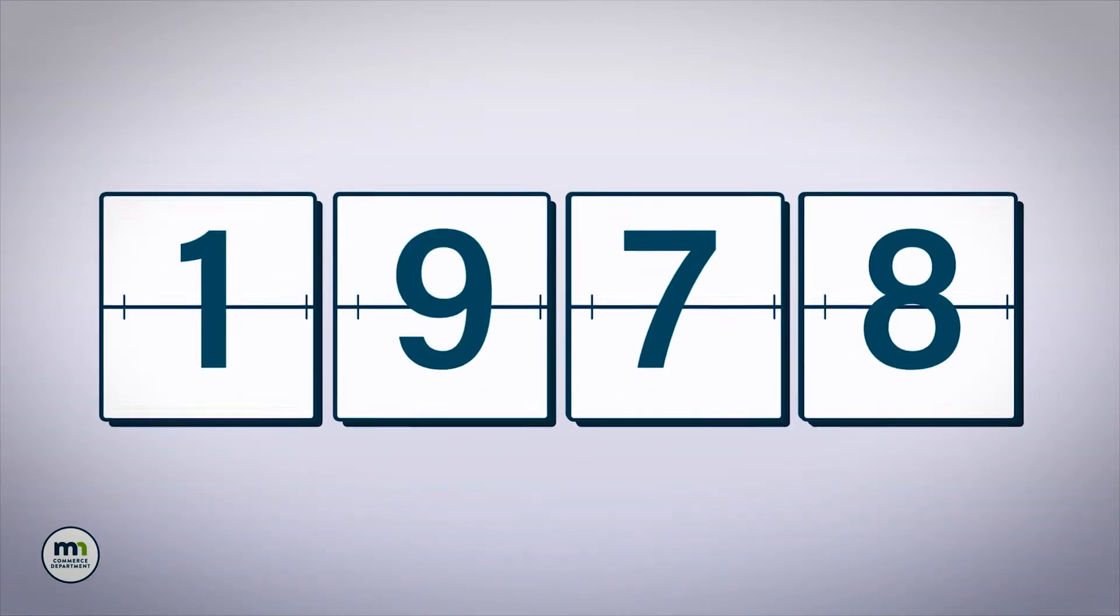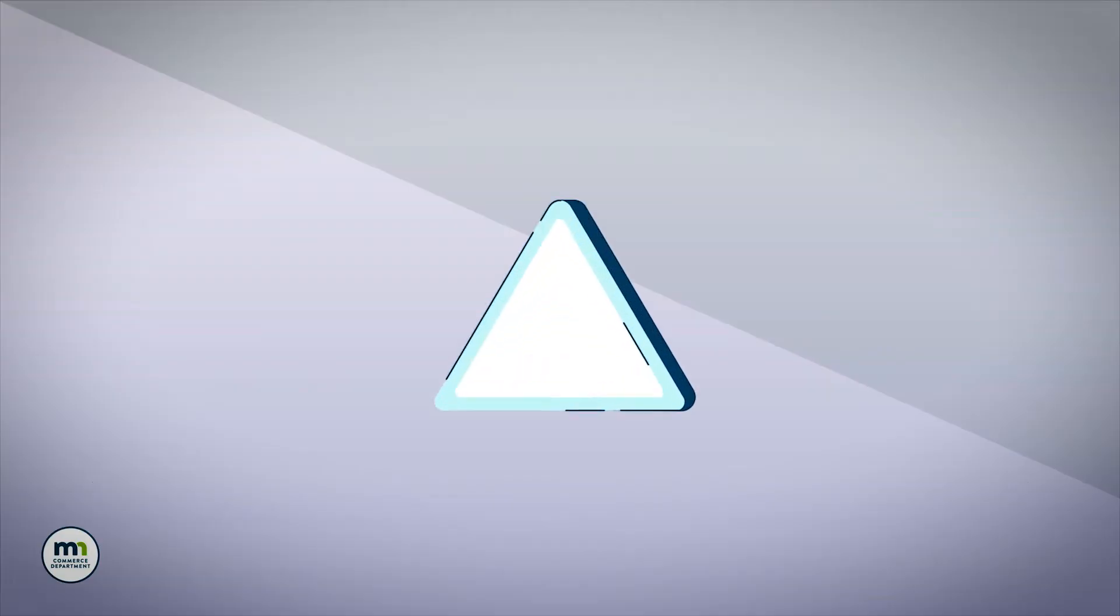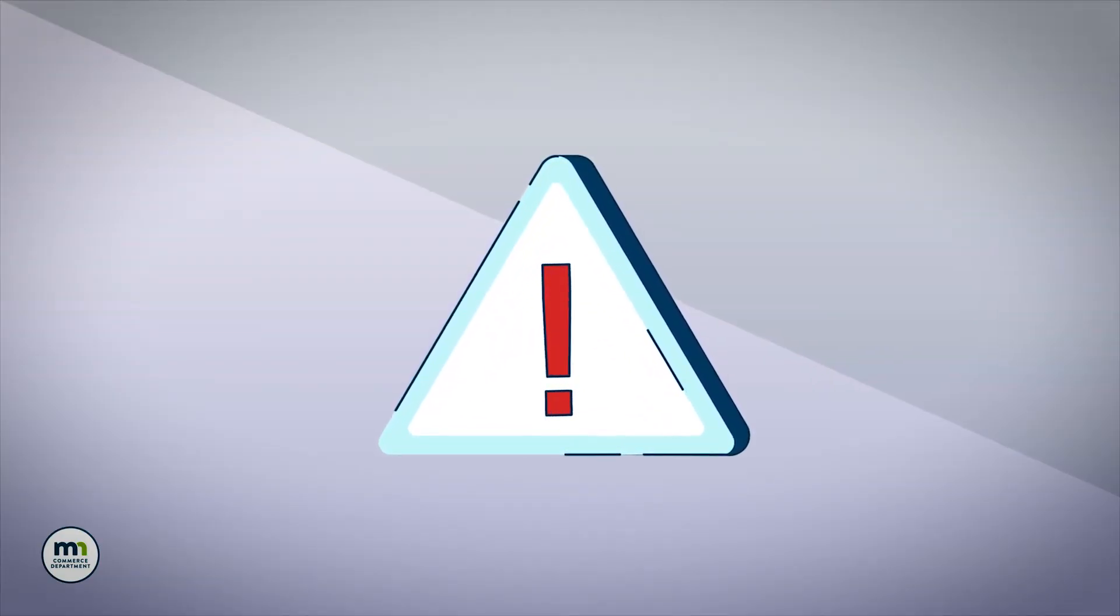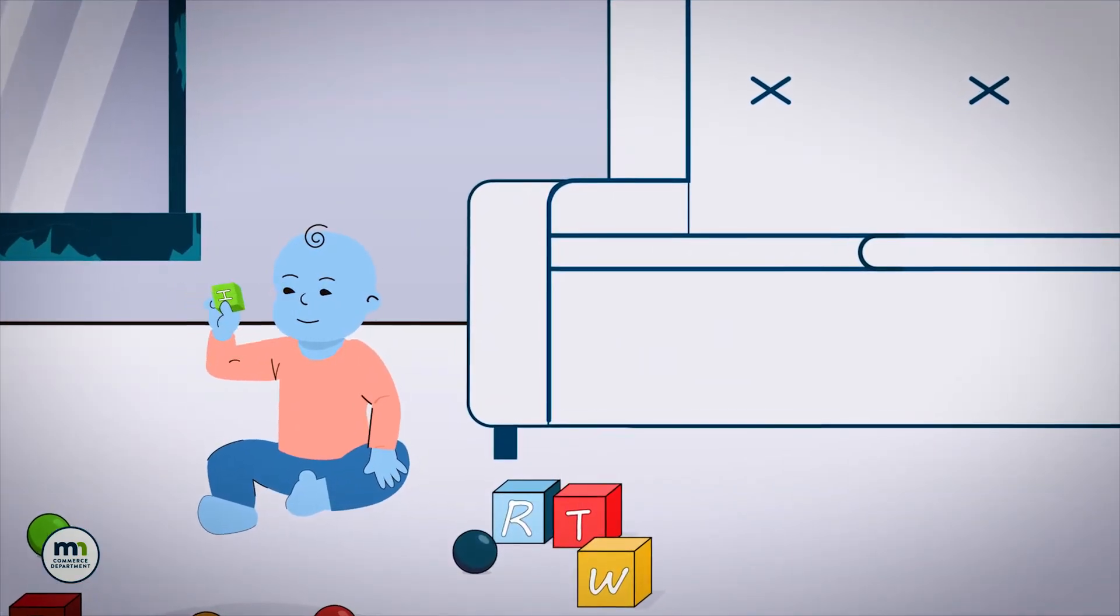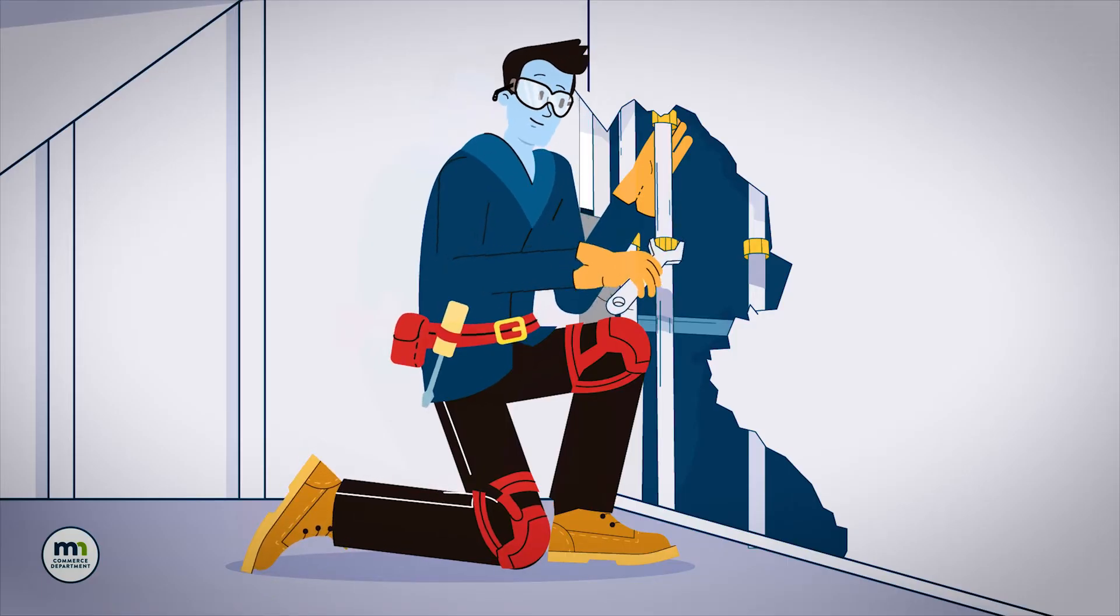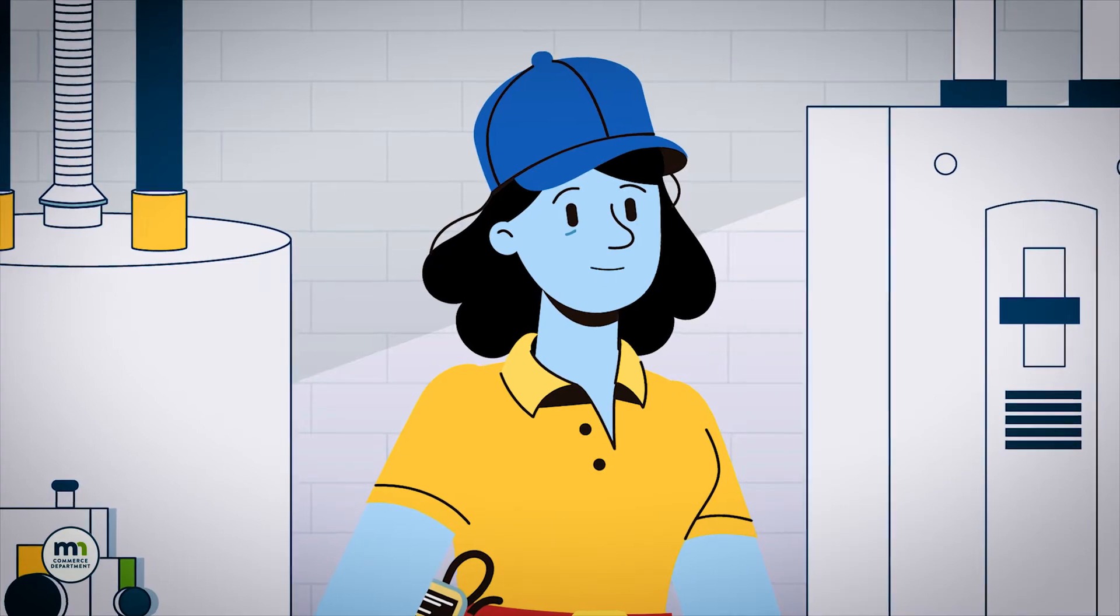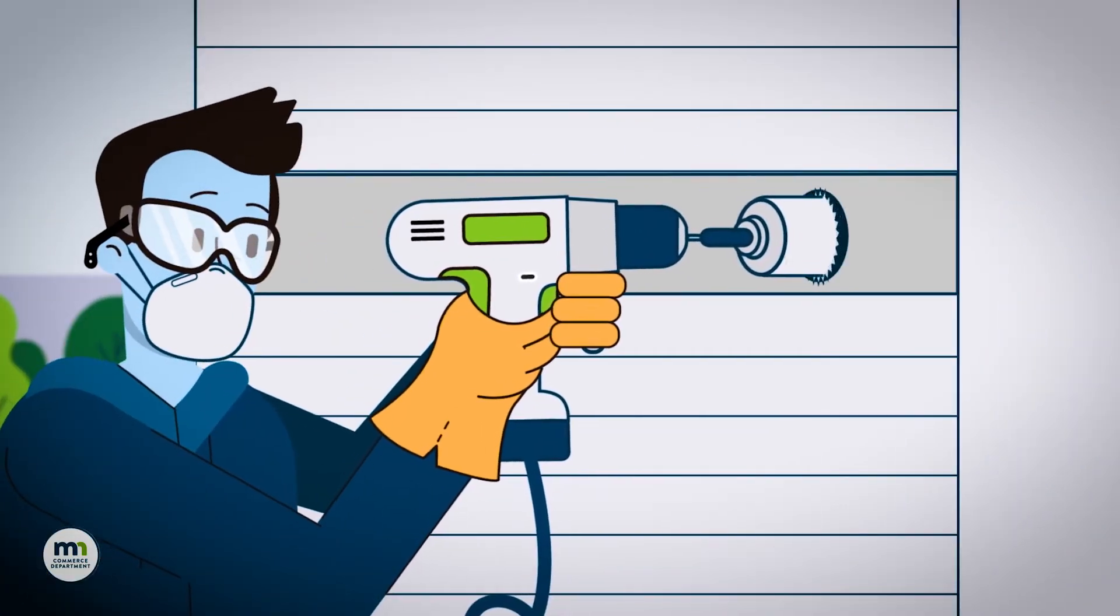Homes built before 1978 may have lead paint on the windows, doors, or other trim. Although not usually a problem if it is undisturbed or covered, lead paint can be a concern. Sometimes young children eat chips or flakes, and lead dust from old paint can get into the air during remodeling or home repairs. That's why we're extra careful when we repair windows or doors, or drill holes for insulation.